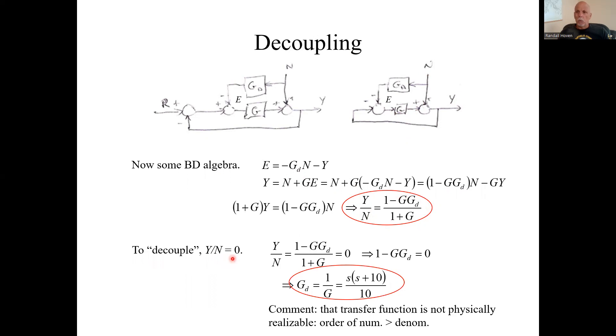Decouple means we want that transfer function to be zero so that none of the noise gets through to the output. Is it possible to make that true? In this case, we set the numerator to zero, or we set G sub D to 1 over G. I believe, unfortunately, this is not a physically realizable transfer function, so we can decouple it in theory but not in practice.